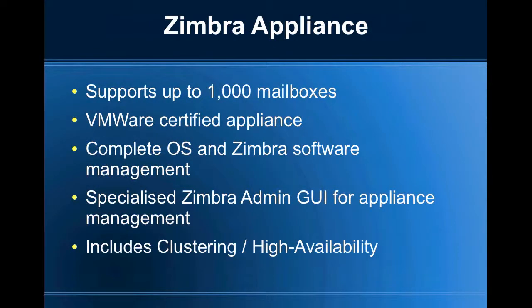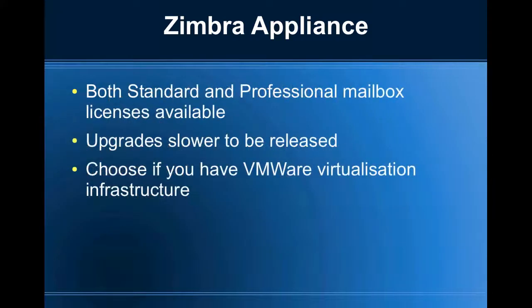The Zimbra appliance supports up to 1,000 mailboxes. It's a VMware certified appliance and includes an operating system as well as the Zimbra software, and a specialised admin user interface to support the entire system. It includes clustering and high availability. You can purchase both standard and professional mailbox licenses. Upgrades by Zimbra are generally slower to be released and you choose this option if you have a VMware virtualisation infrastructure such as ESXi or vSphere.